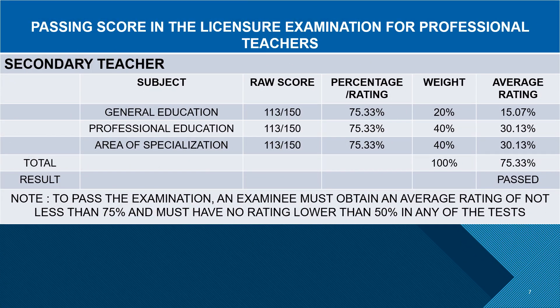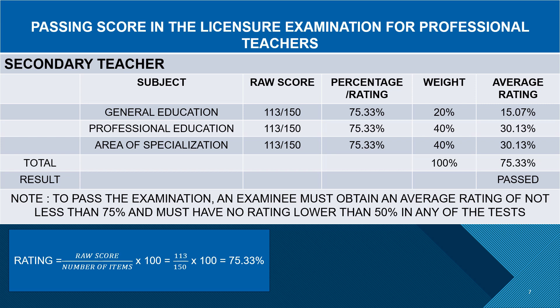Let us have another example. This time we will calculate the final rating of a secondary teacher examinee. We will use the most controversial passing score, which is 113 correct answers in all subject areas: general education, professional education, and area of specialization. Applying the same process, 113 divided by 150 gives 75.33%. Using the same process for the other subject areas, professional education and area of specialization yield the same result. This means that in order to get a 75% rating, you will need 113 correct answers in all subject areas.